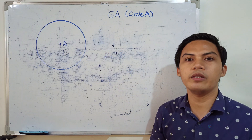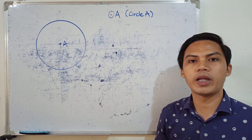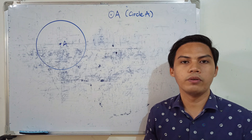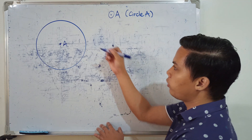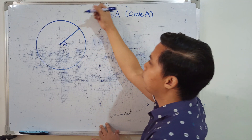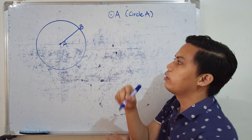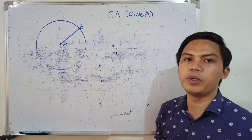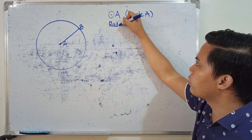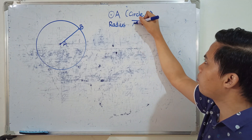Let's talk about the second part — the radius. A radius is a line segment whose endpoints are the center and any point on the circle. If we draw a radius, we draw it from the center to any point on the circle. For example, let's name this point B. So line segment AB would be our radius.